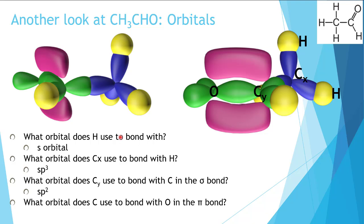Now what orbital does carbon use to form its bond with oxygen? For this, carbon is doing a sigma bond with its sp2 orbital and it's doing the pi bond with its p orbital. So we've walked through all of the bonds here and this is how I would ask it on an assessment.